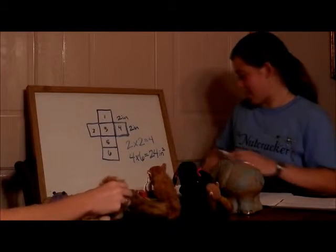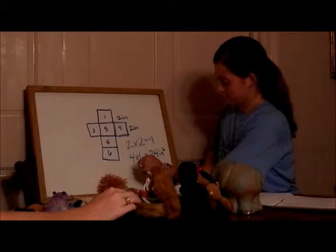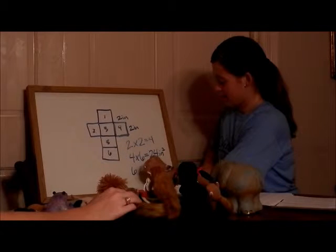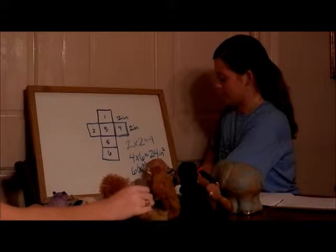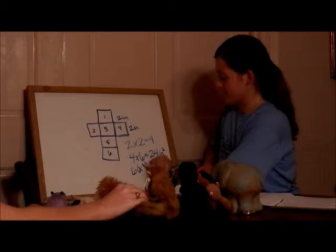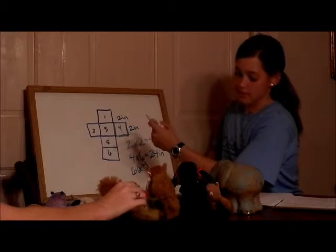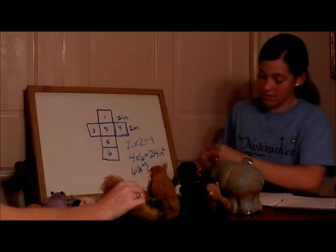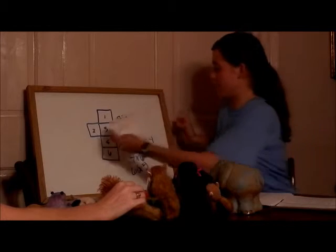We can simplify that by saying 6x², right? So whatever the side length is, squared, times six because there are six faces. Absolutely. So we'll move on to another shape.